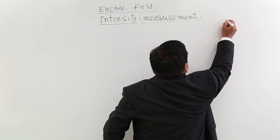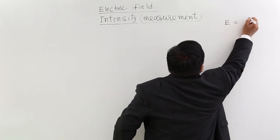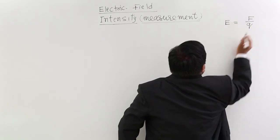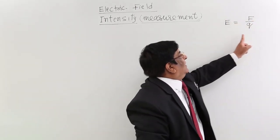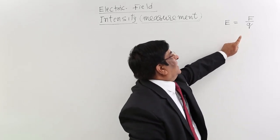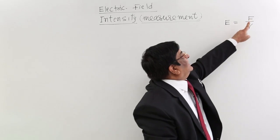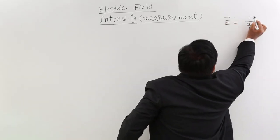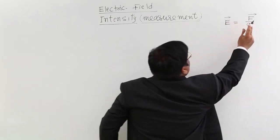What we have done so far: electric field is the force experienced by a unit charge. This is the formula we got for electric field, where this is the test charge. This is the measurement of electric field in terms of force. We will put the vector here.